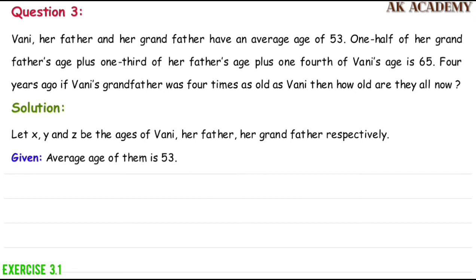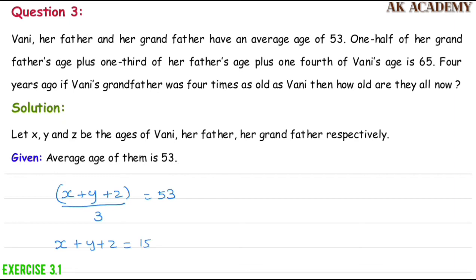Looking at the first statement, the average age is 53. For the average age, we add all three and divide by 3: (X + Y + Z) / 3 = 53. Cross-multiplying, X + Y + Z = 53 × 3 = 159. This is our first equation.